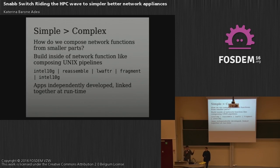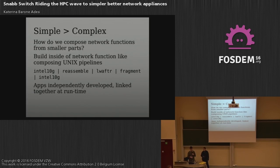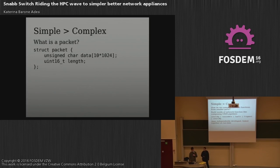For example, how do we actually build a network function — be it a lightweight 4over6, a carrier-grade NAT, a simpler NAT, or L2TPv3? The Snap answer is similar to how we build pipes in Unix, or how we build networks by taking together boxes with specific functions. We develop apps which do specific tasks and link them together at runtime into flexible graphs. In our lightweight 4over6, there's an app which interfaces with the NIC, an app which does IPv4 reassembly, an app that does the actual 4over6 functionality, an app that fragments again on the other side, and then back to the NIC.